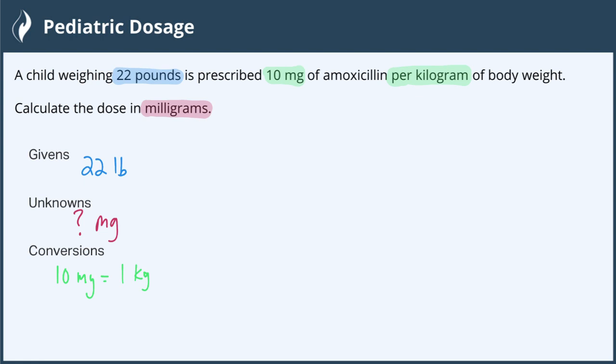So we do need to have the additional part where we convert the number of pounds to kilograms. So we also have the conversion rate of 2.2 pounds is equal to 1 kilogram. So this means we're actually going to be doing two conversions for this problem.